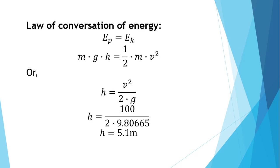So we need to use the law of conservation of energy formula, which is potential energy equals kinetic energy. Potential energy is m times g times h and kinetic energy is 1 half times m times v squared.